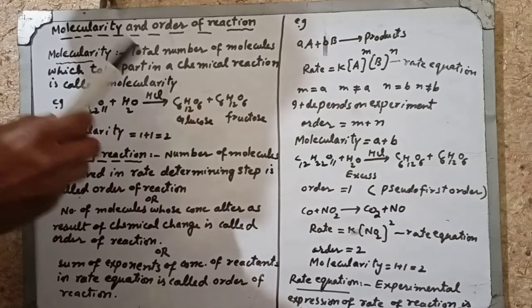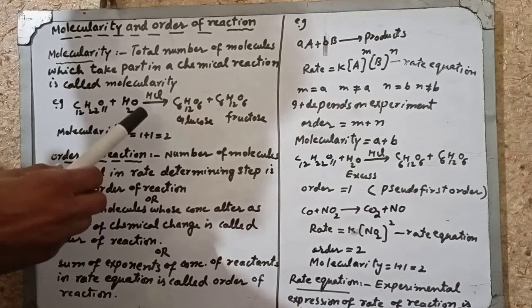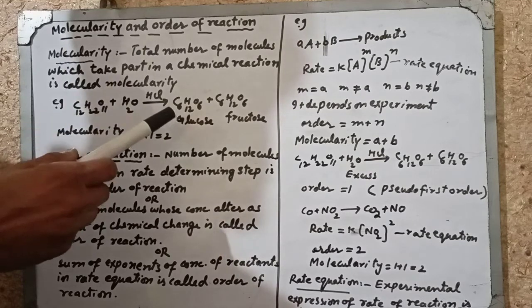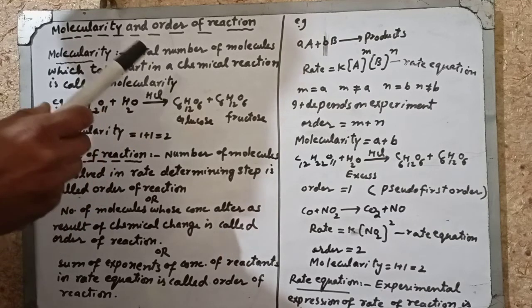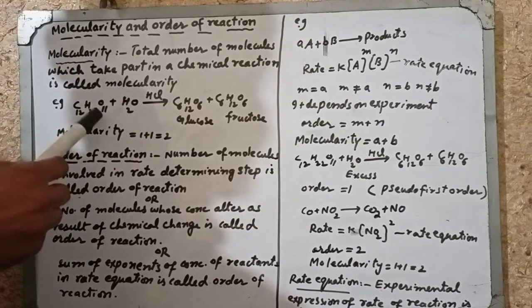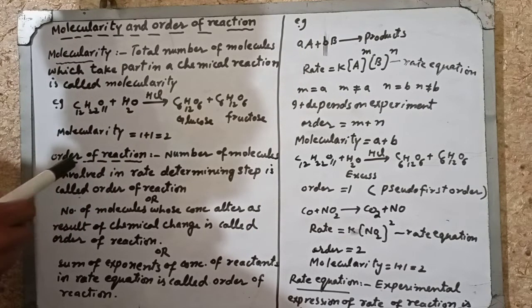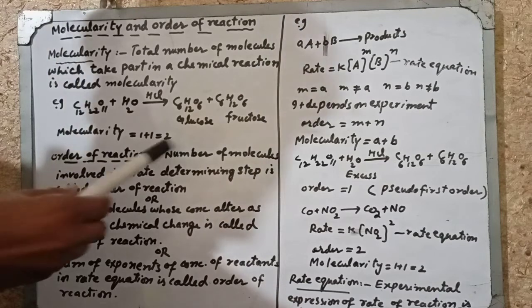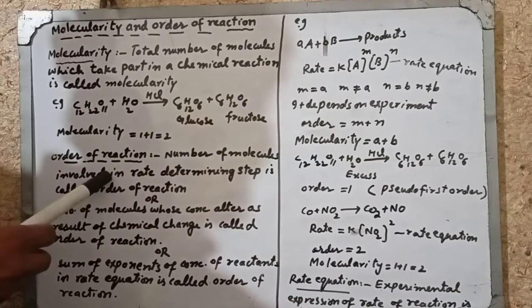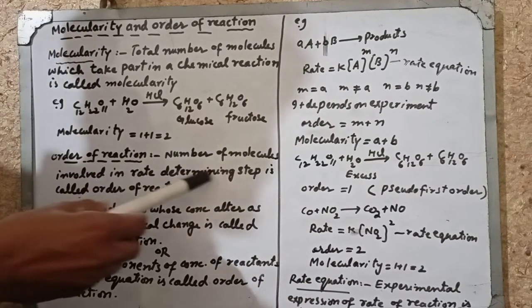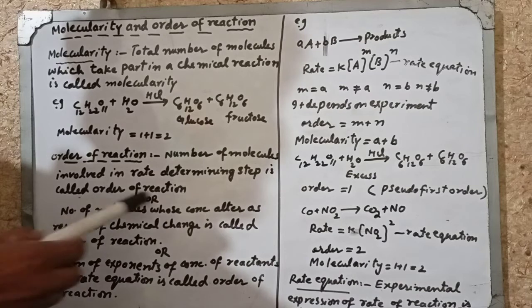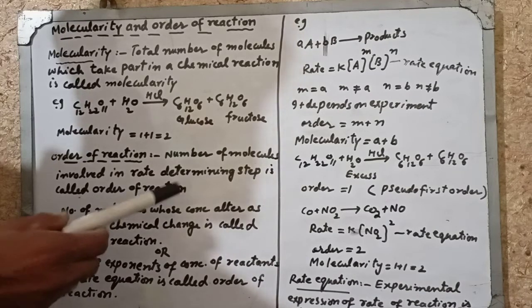Total number of molecules, total number of species, total number of ions involved in a chemical reaction — this is called the molecularity. Order of reaction: the number of molecules involved in the rate determining step is called the order of reaction.